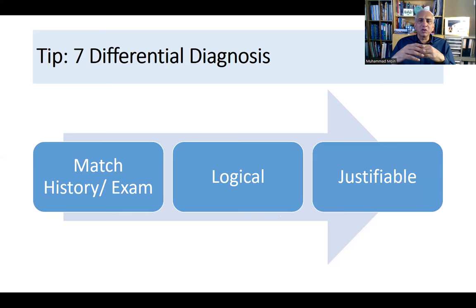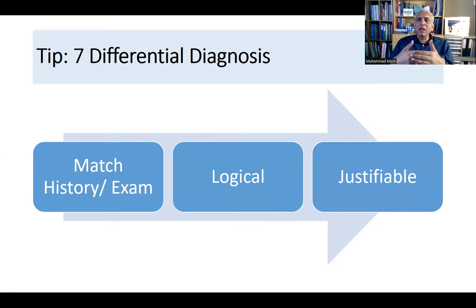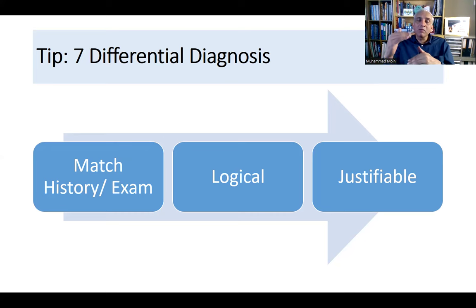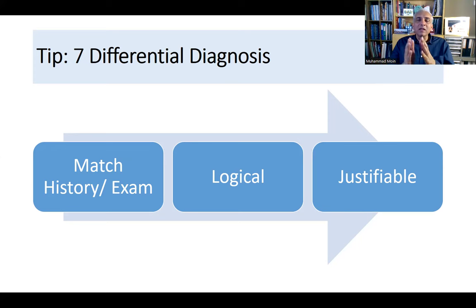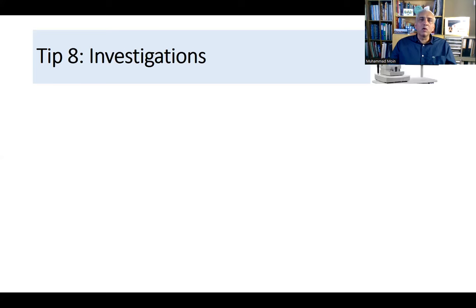If a patient has esotropia, the differential includes accommodative esotropia, paralytic sixth nerve palsy causing esotropia, or medial wall fracture. The most logical answer depends on context — if there's a history of trauma, medial wall fracture goes to the top of the list. To distinguish, perform a forced duction test to get the correct diagnosis.